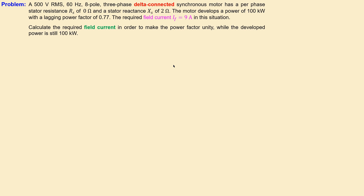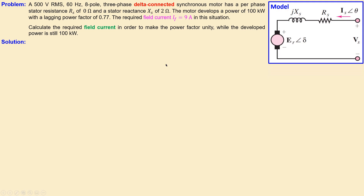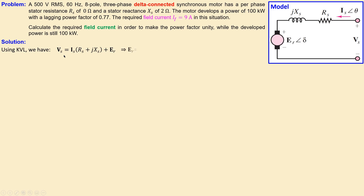So how do we work this out? Let's look at our solutions step by step. We start with a model — this is our model for the synchronous motor. We have the phase voltage, the stator current, the elements in the stator, and the back EMF. Using Kirchhoff's voltage law as our starting point, we can develop this expression and rewrite it for our back EMF.